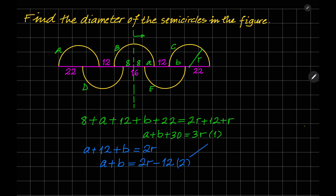If you combine these two equations — substituting a plus b in equation 1 with 2r minus 12 — then equation 1 becomes: 2r minus 12 plus 30 is equal to 3r. If we simplify this equation, the radius of the semicircle is equal to 18.